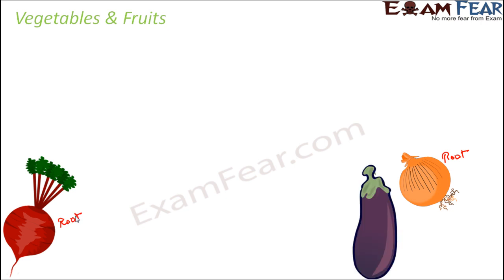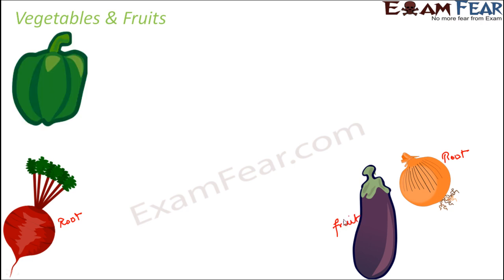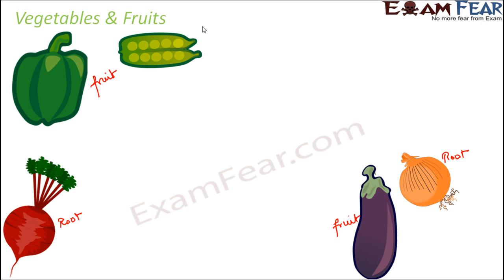Beet is again the root of the plant, so this also remains below the ground. Now think about brinjal — brinjal is not under the ground, brinjal is above the ground, and brinjal is actually a fruit of a plant. Similarly, capsicum is also a fruit of the plant — capsicum is like a kind of chili.